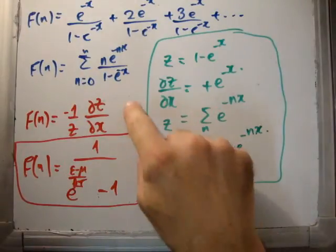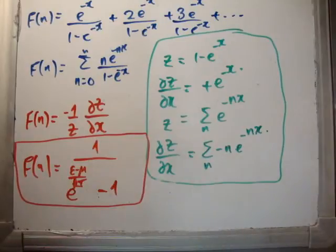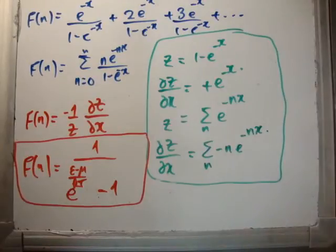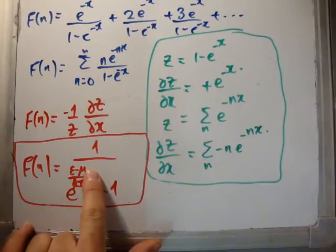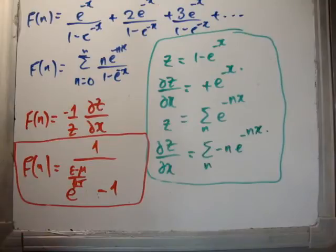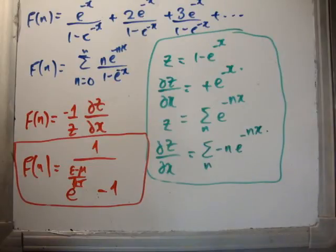This formula — minus 1 over Z del Z del x — works for both fermions and classical particles, which I'll cover in the next video. The Bose-Einstein distribution function is 1 over e to the (epsilon minus mu) over kT minus 1. This chemical potential mu I'll discuss further when covering the Planck distribution, but for now we'll leave it in. Thanks for watching — please pass it on to your friends, subscribe to my channel, and check out universityphysicstutorials.com.